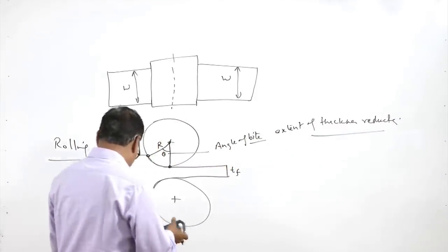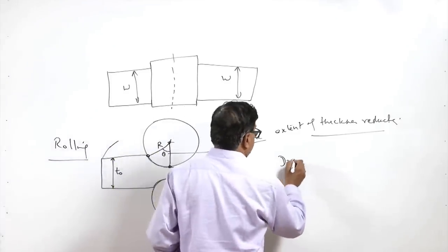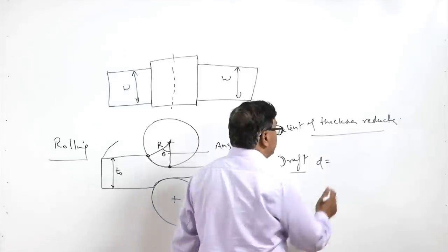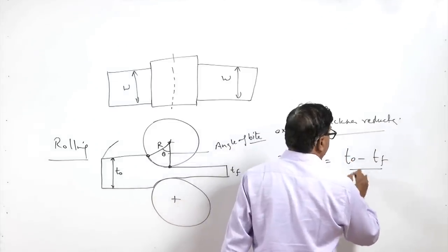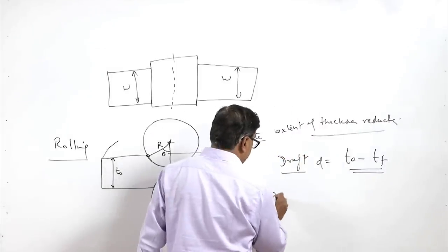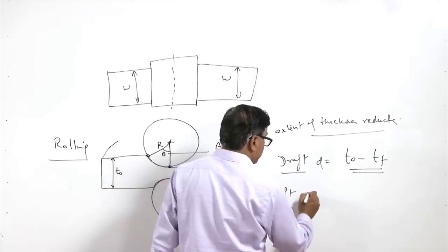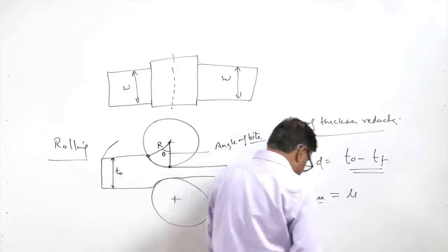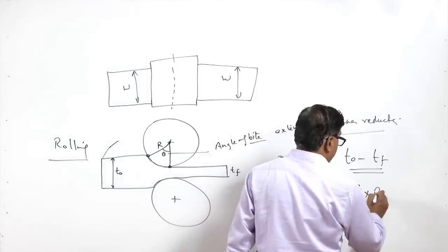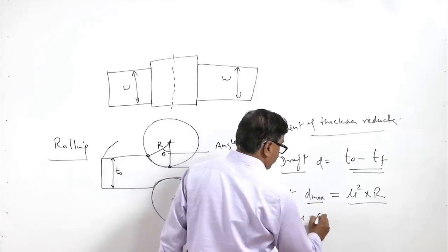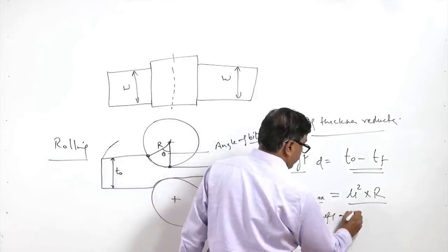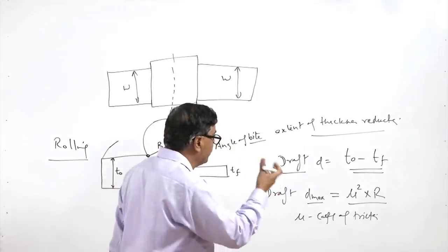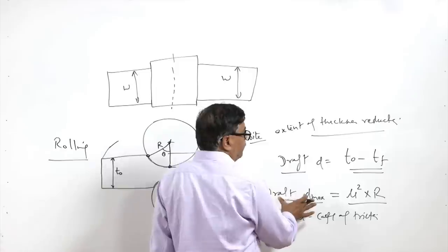Draft D is basically the difference between initial plate thickness and final plate thickness. The maximum draft achievable, D_max, is a function of μ² × R, where μ is the coefficient of friction between the metal and the rollers. If surface roughness is more, more draft is possible.